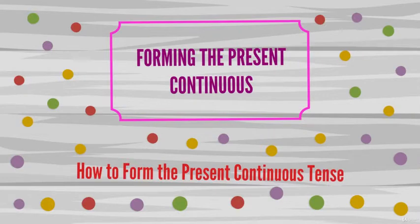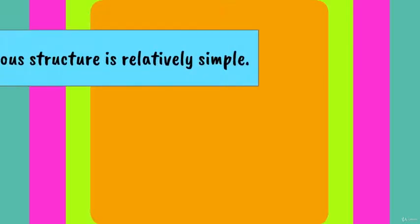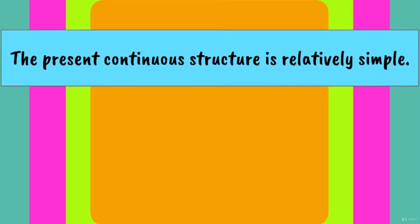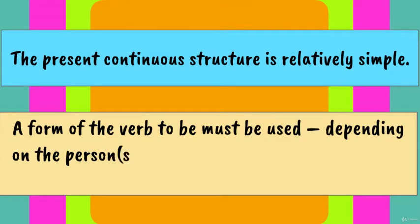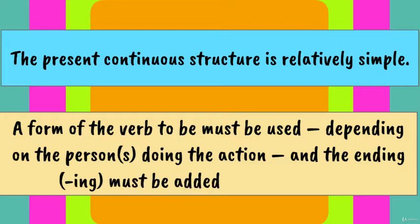How to form the Present Continuous Tense? The present continuous structure is relatively simple. A form of the verb to be must be used depending on the person or persons doing the action and the ending ing must be added to the basic verb.